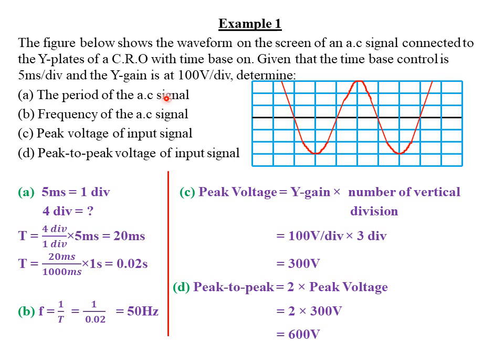Determine part A: the period of the alternating current signal. From waves one and waves two, we defined a period as the time taken to make one complete oscillation. The period is always measured using the time base, and the time base is always connected to the X plates of a cathode ray oscilloscope. The X plates are responsible for horizontal deflection of the beam.